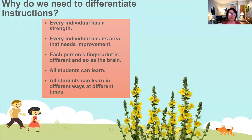Why do we need to differentiate instructions? Every individual has a strength and every individual also has areas that need improvement. There are fast learners and students who need more time to understand a lesson. Just as each person's fingerprint is different, so is the brain — all students can learn, but they learn in different ways at different times.